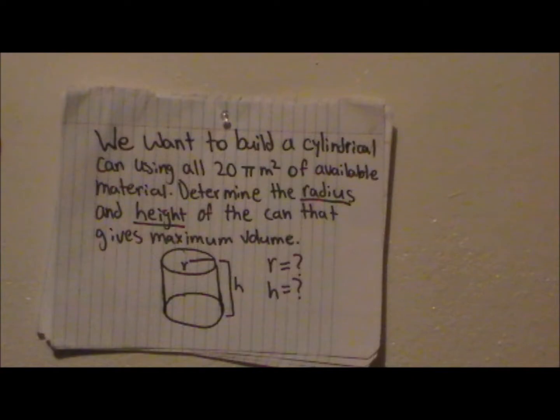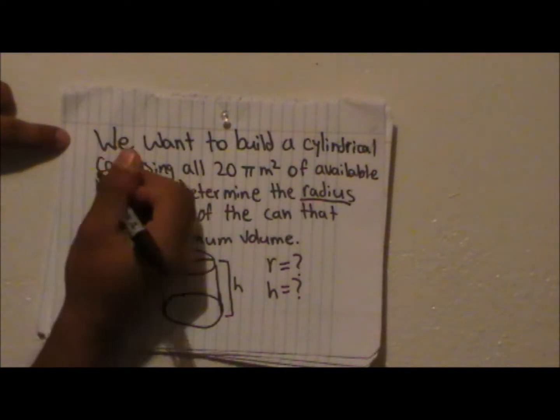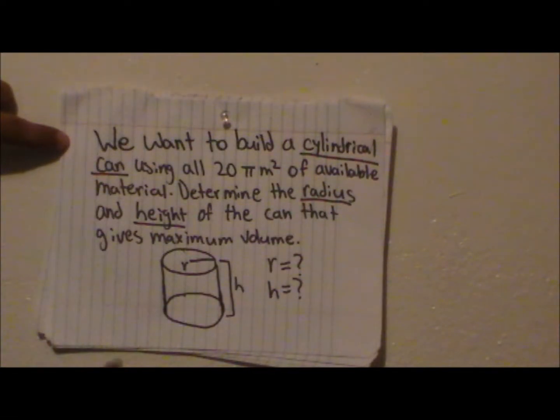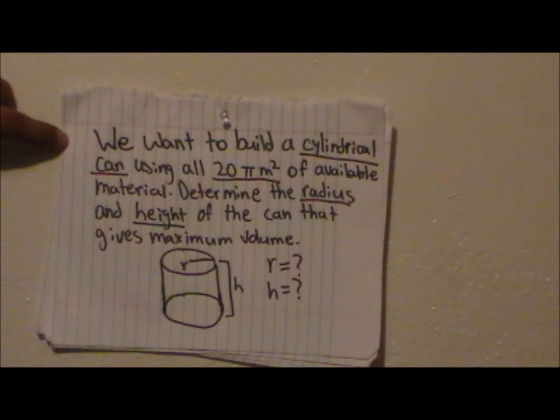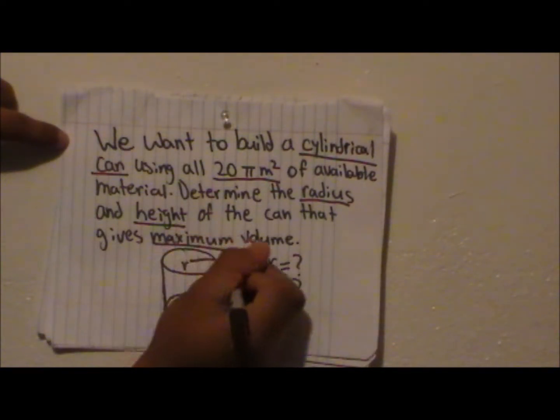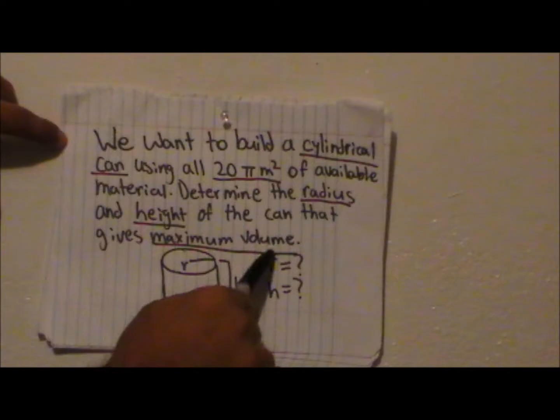So let's go back and highlight or underline the useful information. So we know that it's a cylinder. They're giving us 20 pi meters squared of available material, and they want the height and the radius for maximum volume.